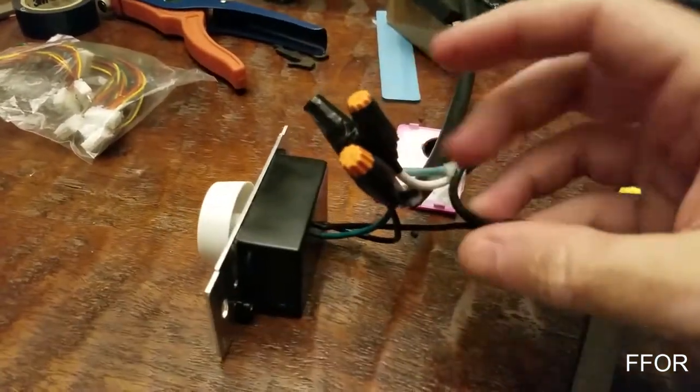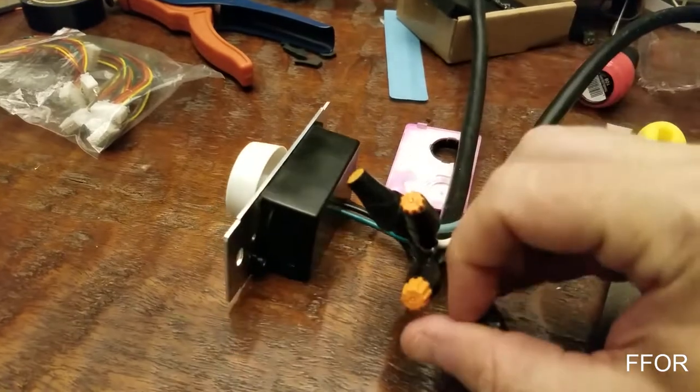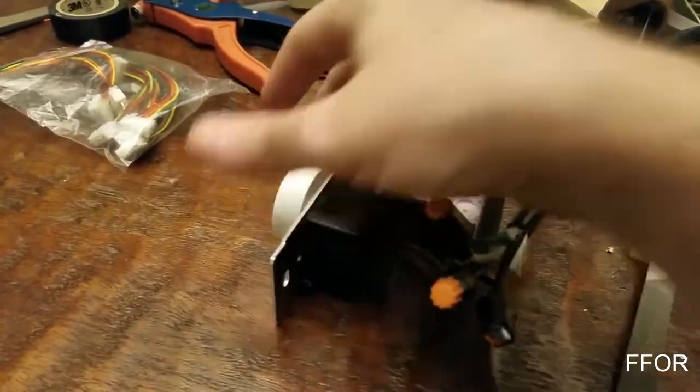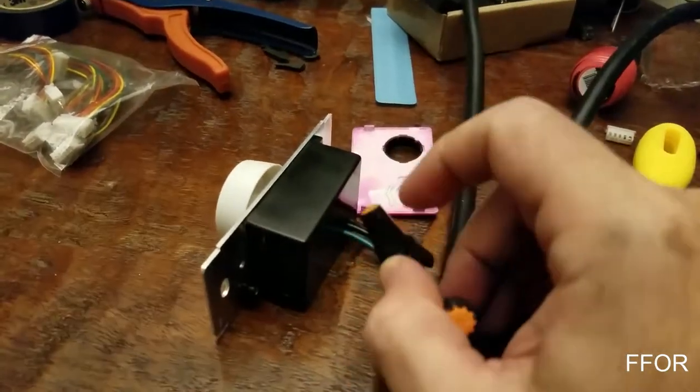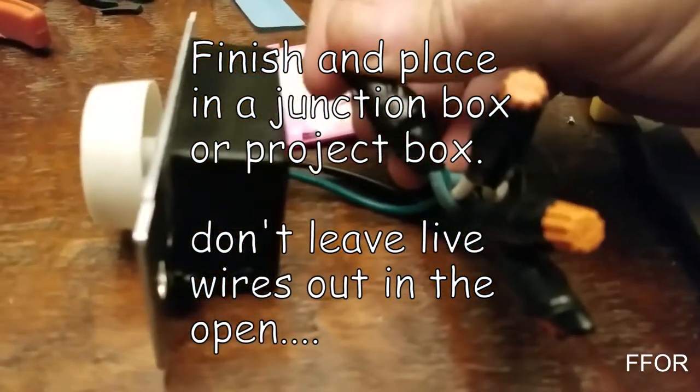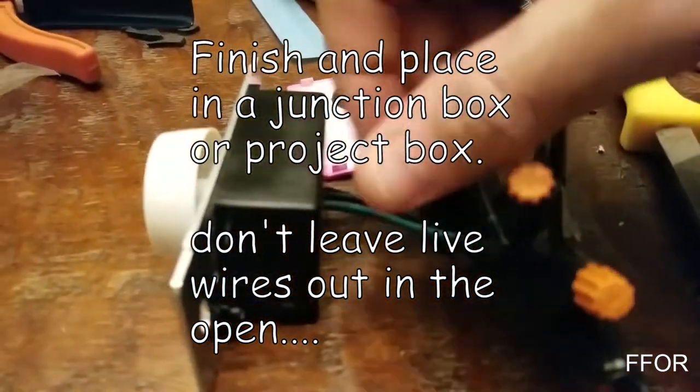So basically you have an input and an output. The rheostat controls how much goes through. Think of it like a little water valve, very easy. Your greens are all going to go together, so there are three of them. Twist them together, tape it off.